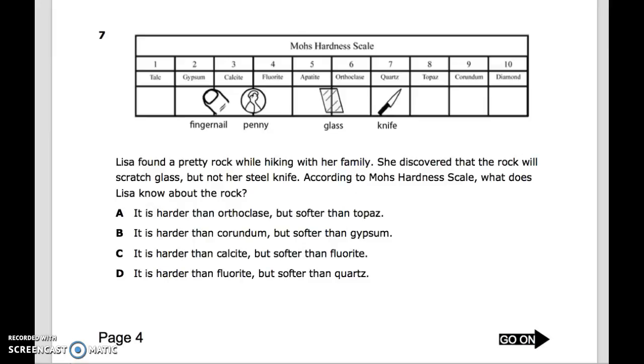Number 7: Mohs hardness scale - Talc, Gypsum, Calcite, Fluorite, Apatite, Orthoclase, Quartz, Topaz, Corundum, Diamond. Fingernail, Penny, Glass, Knife. Lisa found a pretty rock while hiking with her family. She discovered that the rock will scratch glass, but not her steel knife. According to the Mohs hardness scale, what does Lisa know about the rock? A. It is harder than Orthoclase, but softer than Topaz. B. It is harder than Corundum, but softer than Gypsum. C. It is harder than Calcite, but softer than Fluorite. D. It is harder than Fluorite, but softer than Quartz.